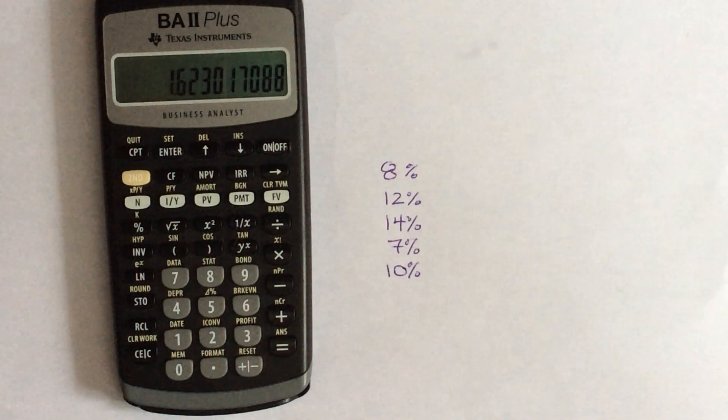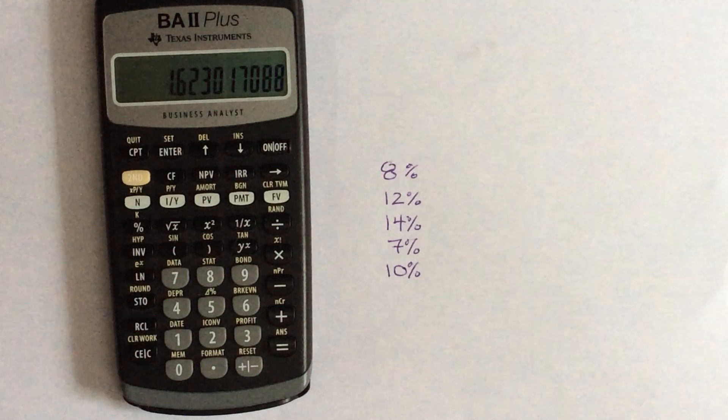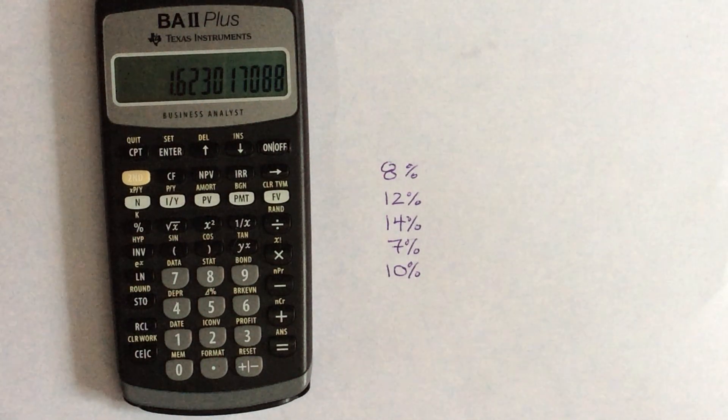And so this would be the number that's underneath our nth root sign. Because we have five data points, it's going to be the fifth root. So we need to raise this to the power of 1 over 5.